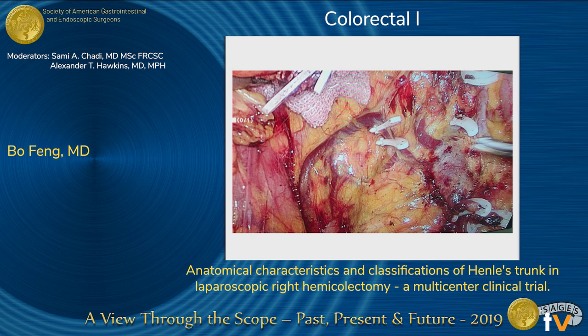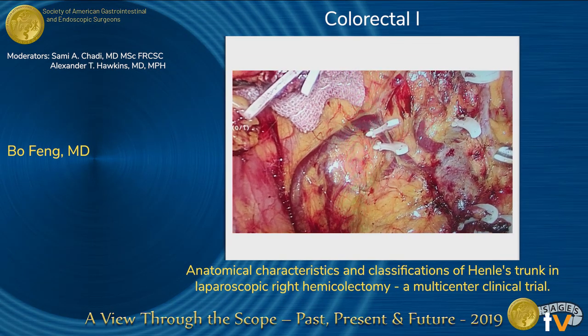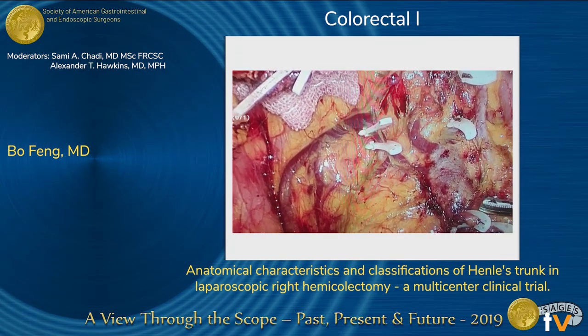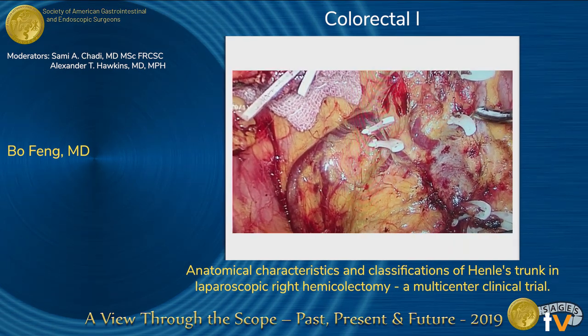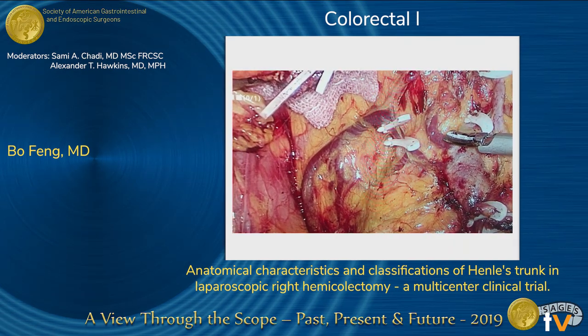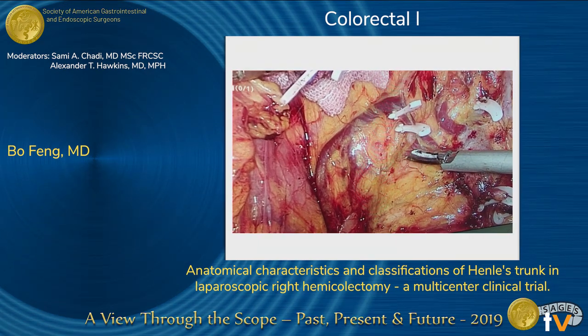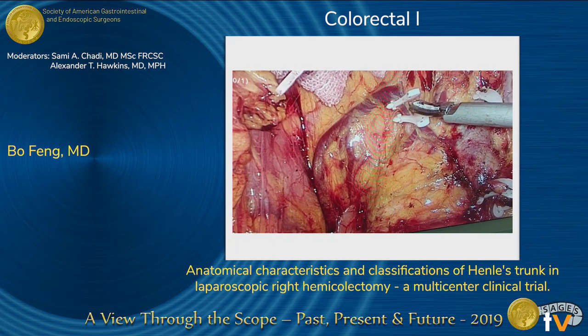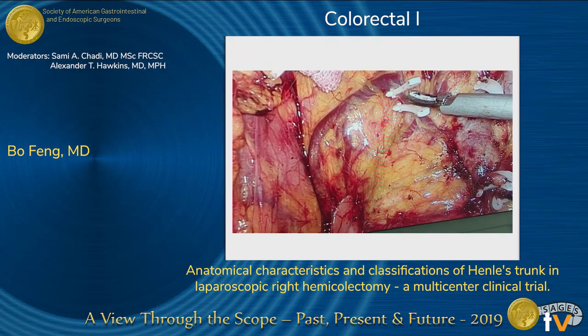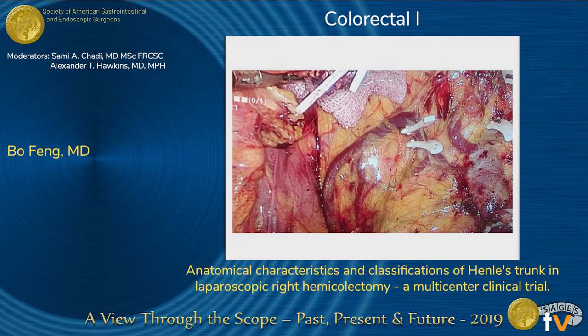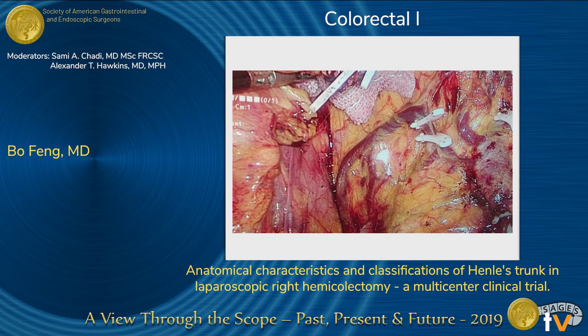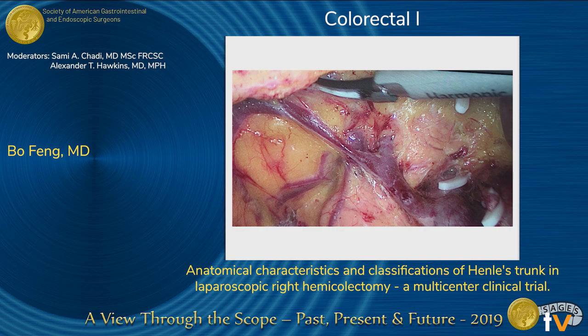This is a type 3 case. And this is the very interesting case I mentioned — the other type. In this case, Henle's trunk is missing and the right gastroepiploic vein originates directly from the SMV. There is only one vein originated from the colon that has been dissected here. This represents another variant type.